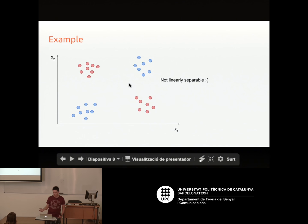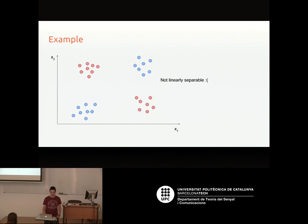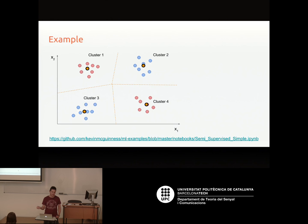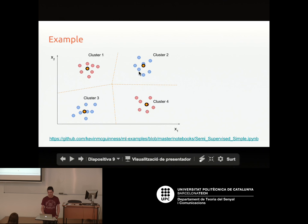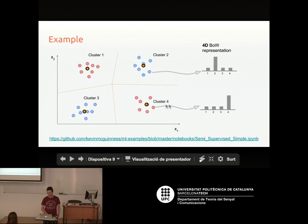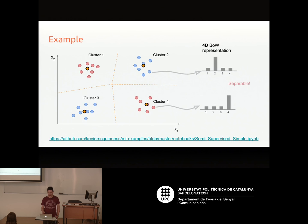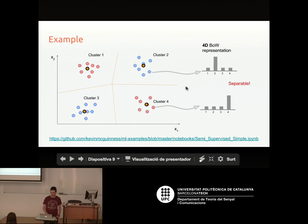But if we know something about the distribution of the data or the data generation process, we can do better. We can look at the data and hypothesize that these look like they come from clusters. If we fit clusters and represent each point as a one-hot encoding in four dimensions depending on which cluster it comes from, the points become linearly separable and can be classified with a linear classifier. If you don't believe that, there's a notebook that back-projects the decision boundary and you can see it actually works.